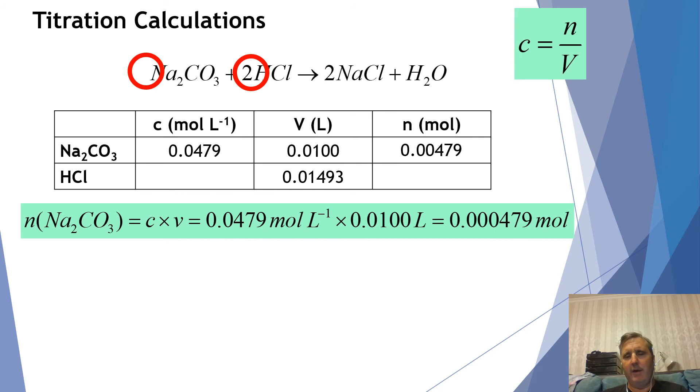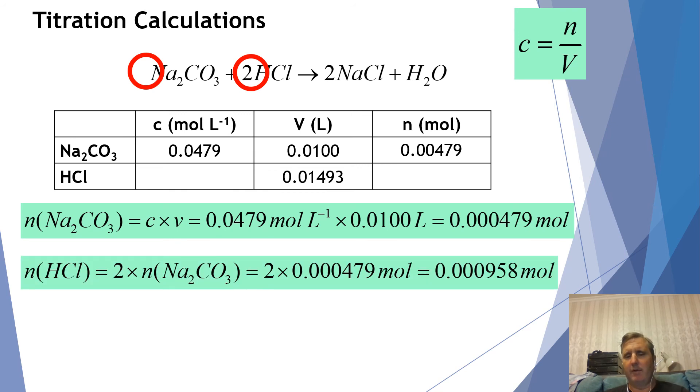So what I can do here is I can say well if I have sodium carbonate here and I know its amount, I know I have twice as much hydrochloric acid. So I multiply this by two to get twice as much and I put that value in here.